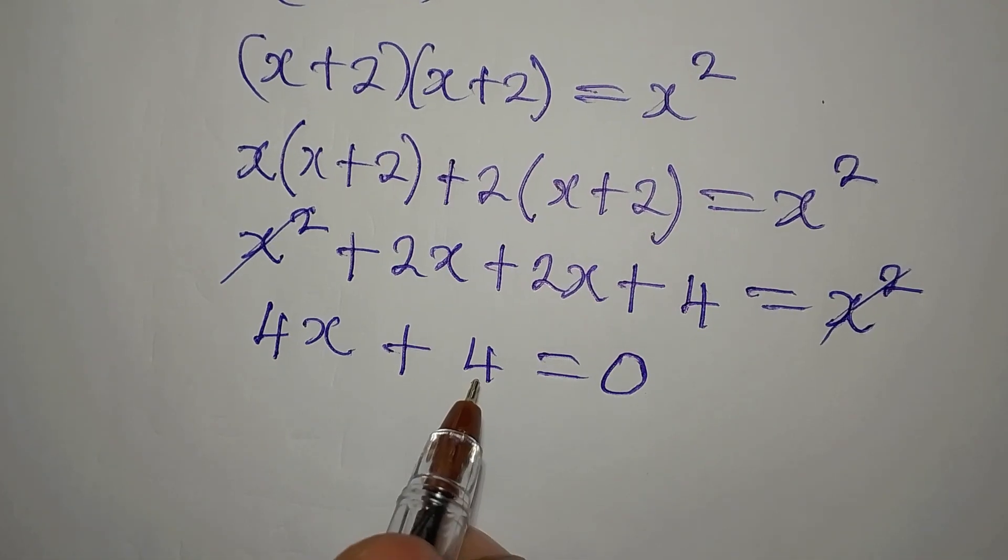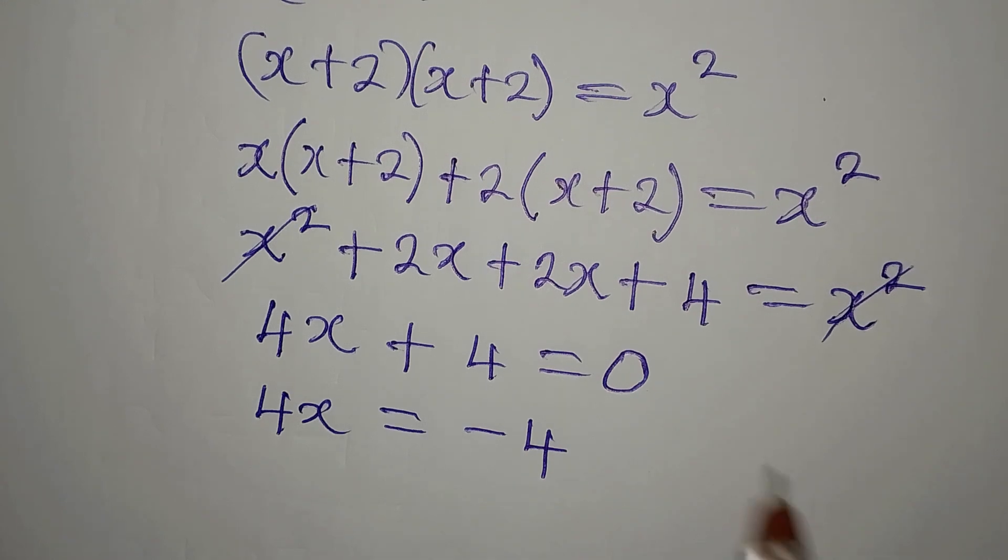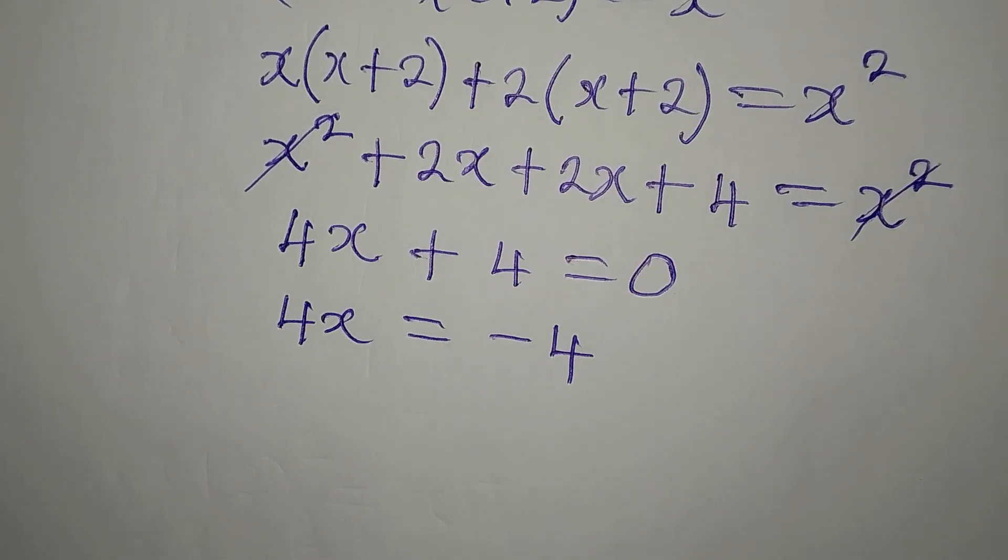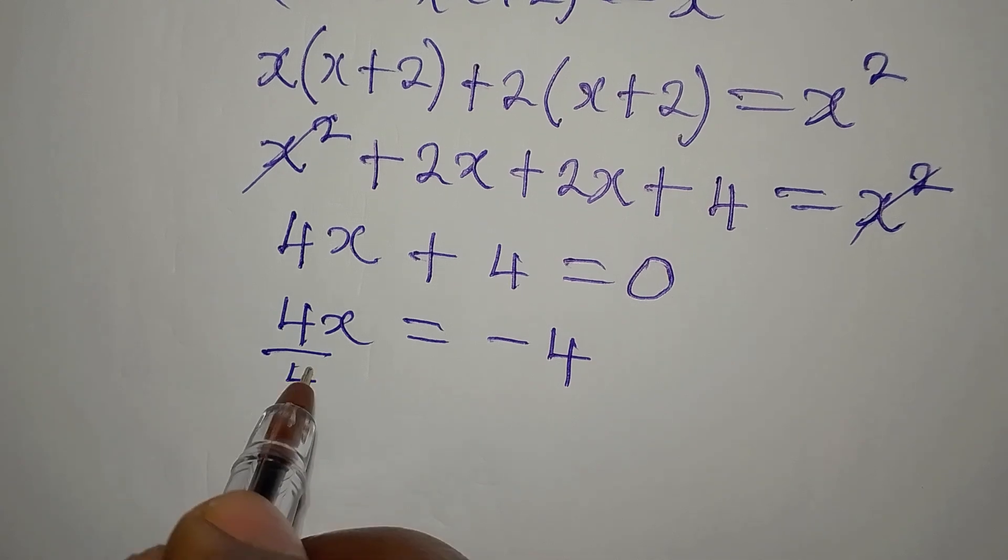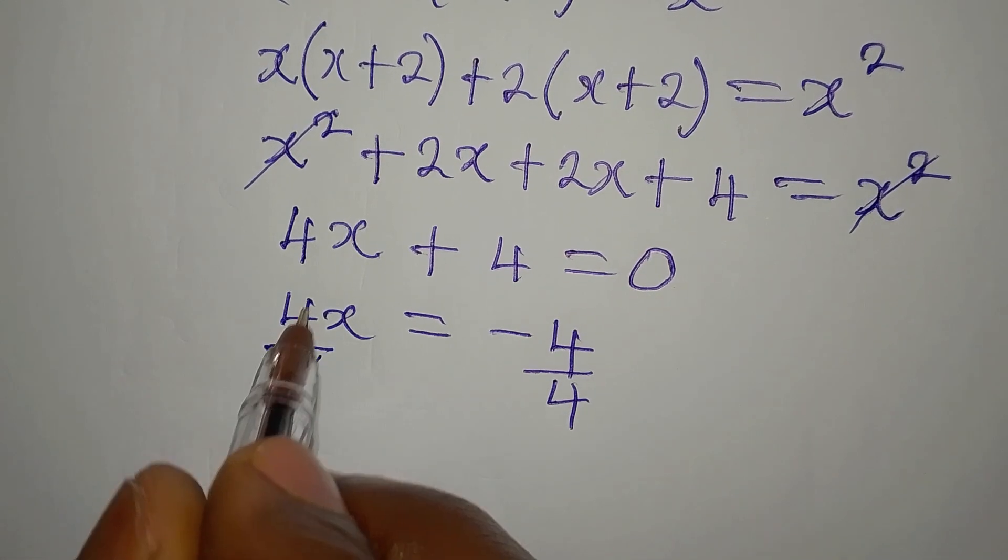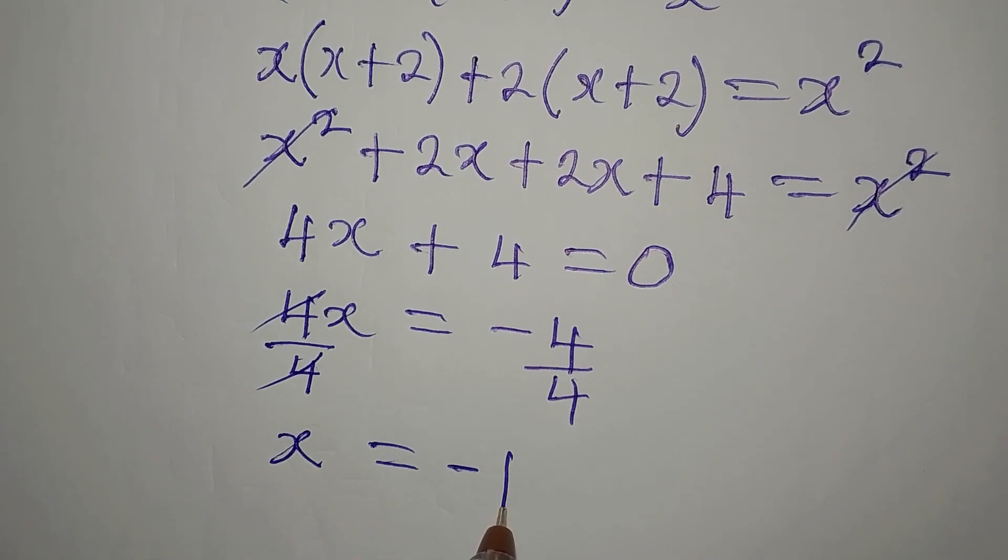Take 4 to the other side so we have 4x to be equal to minus 4. Since we are looking for the value of x, you divide by 4. If we do that, this can go with this and then x is equal to minus 1.